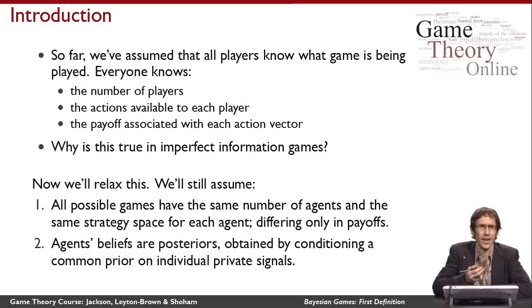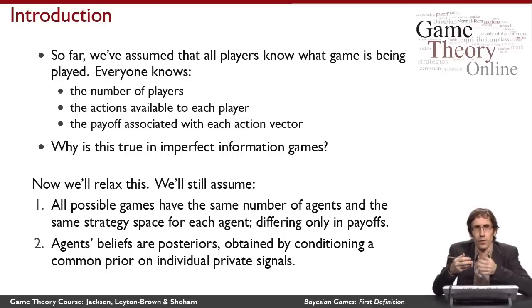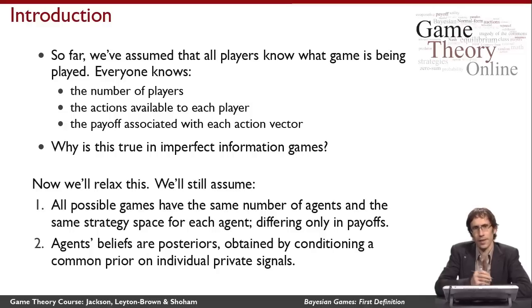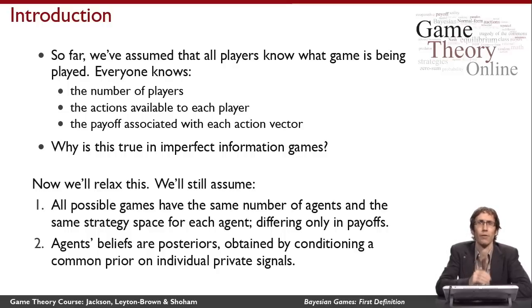That's important because it's just difficult to model a situation where you're not quite sure what strategy space you have — it wouldn't be clear how to act. Now you might find it useful to reason about games in which you're not sure what other agents there are. It turns out that's actually possible to capture within this framework — you would just always believe that the maximum number of agents were present, and set up the utility functions so that sometimes some agents can't affect anything.